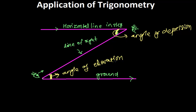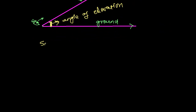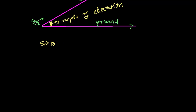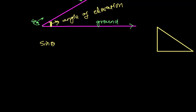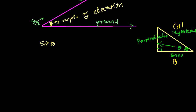Now, once more let me repeat the right angle triangle. I know you know these things, but let me go through them again. The largest side of a right angle triangle is called the hypotenuse. The other sides are the base and the opposite side, which we also call the perpendicular.